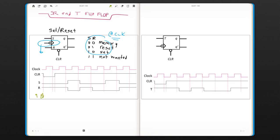But then clear is 0, which is enabled. That means your Q output is going to be 0 until clear is done.